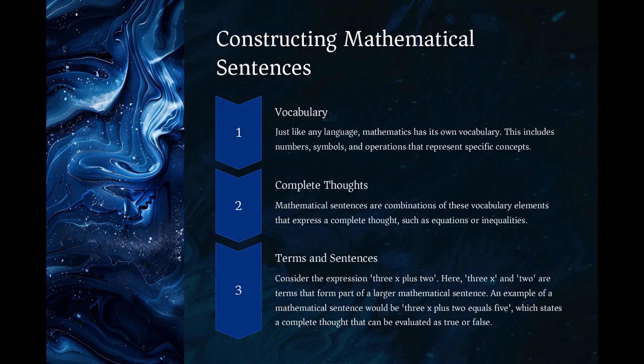Consider the expression 3x plus 2. Here, 3x and 2 are terms that form part of a larger mathematical sentence. An example of a mathematical sentence would be 3x plus 2 equals 5, which states a complete thought that can be evaluated as true or false.